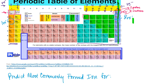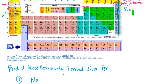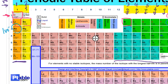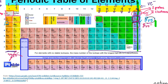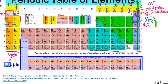If sodium is going to form an ion, its options are to either gain or lose electrons. If it gains electrons, it would be moving away from neon's configuration and toward argon, which is a further noble gas. So sodium is not going to want to gain electrons.